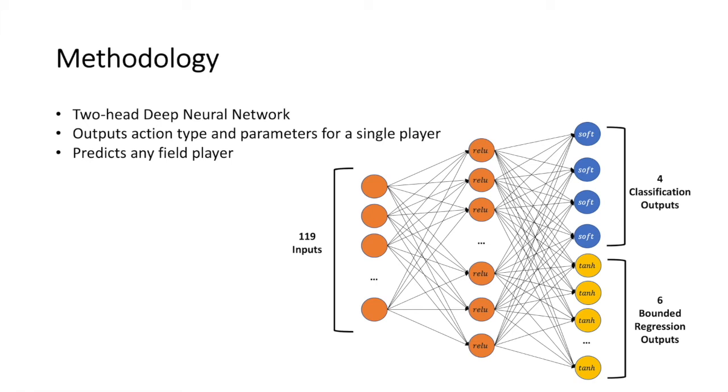We use ReLU activation functions for the hidden layers, softmax activation for the classification output, and hyperbolic tangent activations for the regression outputs, since the action parameters are inside a bounded interval.